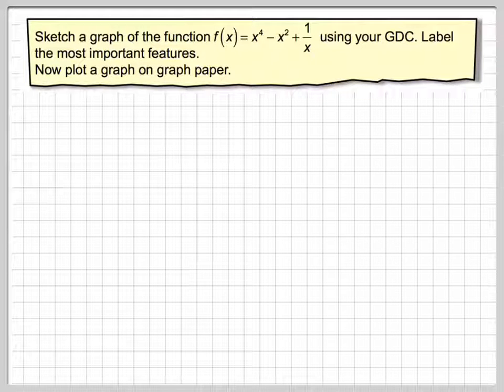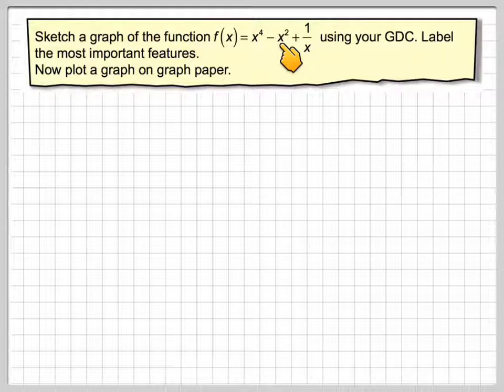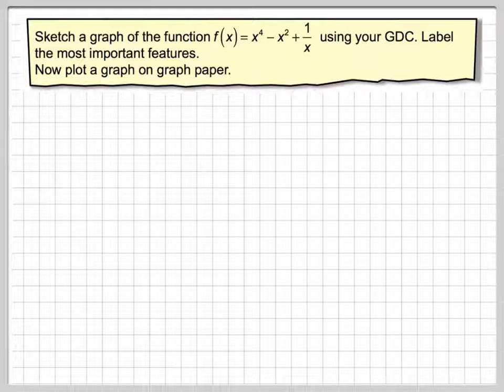Welcome to a video about sketching a function with a GDC and then actually using a GDC to create a plot on graph paper. First of all, we have to sketch the graph of the function f(x) = x^4 - x^2 + 1/x using our GDC. Label the most important features and then plot the graph on graph paper. So first of all, we're going to do a sketch and then we're going to do an accurate plot.